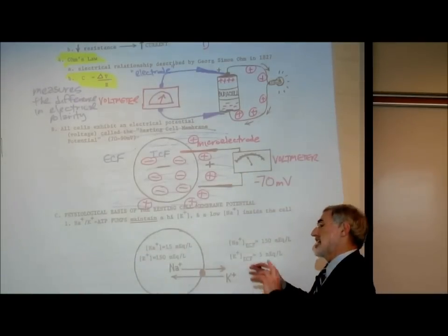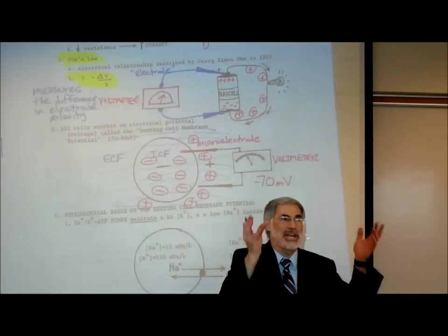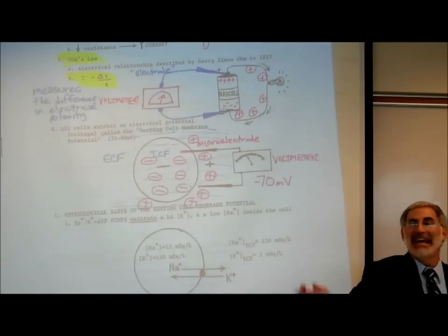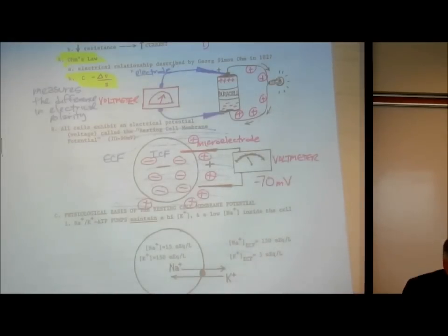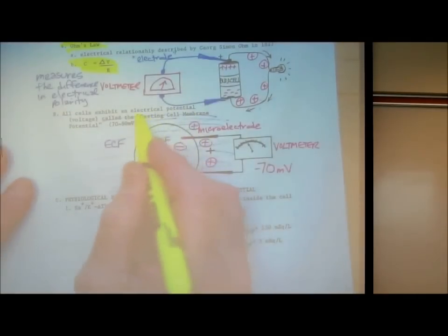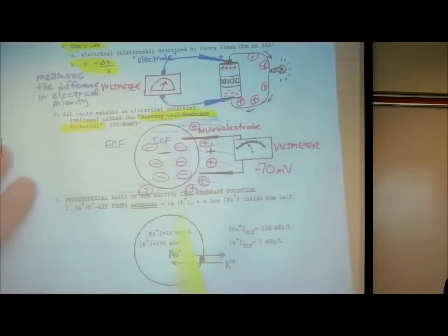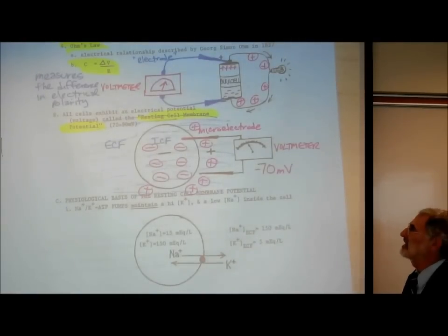This voltage has been found to exist in every cell of every living organism. It's not just found in nerve cells — it's found in plant cells, bacterial cells, and skin cells. We call this the resting cell membrane voltage, or cell membrane potential, and it's found in every living cell.